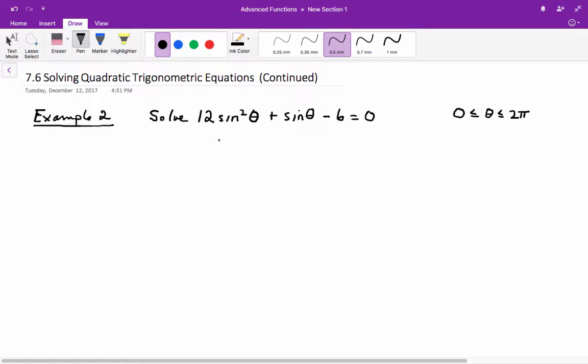In this particular question, we're asked to solve 12 sine squared theta plus sine theta minus 6. This is a trinomial in sine theta. It's not a simple trinomial because of the 12. So we're looking for two numbers that add to 1, and they're going to multiply to 12 times negative 6, which is negative 72.